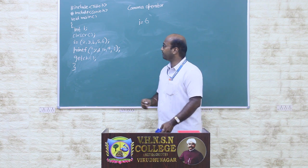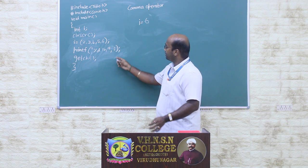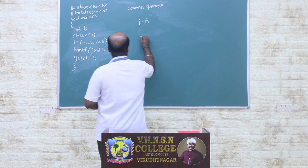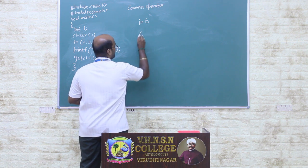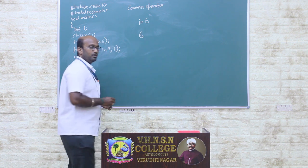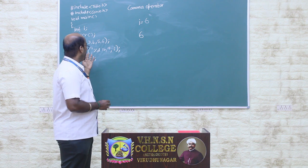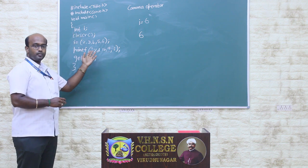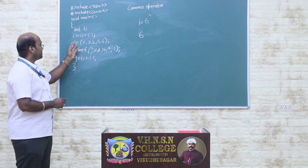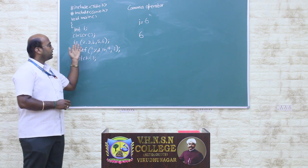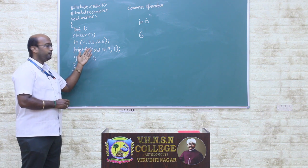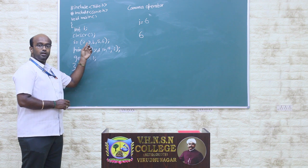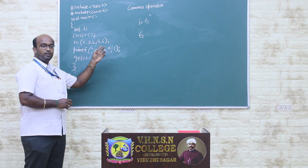So while we print the variable, the value printed is 6, so the value 6 will be printed in this statement. The comma operator executes every statement after it — so 2, 3, 4, 5, and 6 are all assigned in sequence.